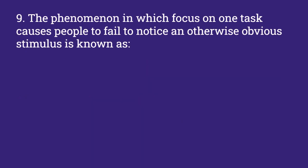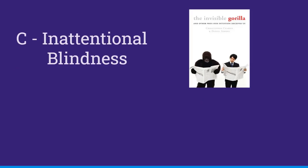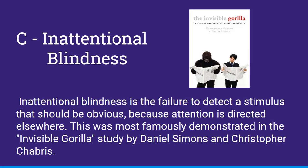The phenomenon in which focus on one task causes people to fail to notice an otherwise obvious stimulus is known as: change blindness, ironic process theory, inattentional blindness, dichotic listening, or mere exposure effect. And this is C, inattentional blindness. Inattentional blindness is the failure to detect a stimulus that should be obvious because attention is directed elsewhere. This was most famously demonstrated in the Invisible Gorilla Study by Daniel Simons and Christopher Chabris.